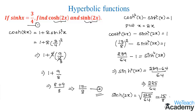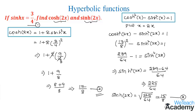Let us name this as equation 3 — the value of hyperbolic sine 2x is 15/8. As a note, the formulas used are: hyperbolic cos 2x equals 1 plus 2 hyperbolic sine squared x, and the identity hyperbolic cos squared x minus hyperbolic sine squared x equals 1. Hope you understood the concept. In our next videos we are going to solve more examples using various formulas of hyperbolic functions.